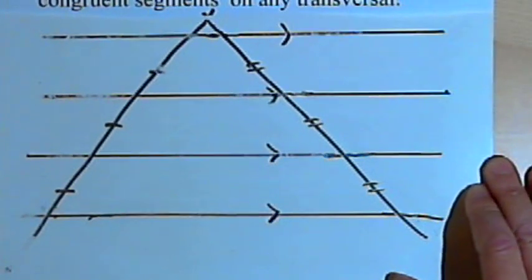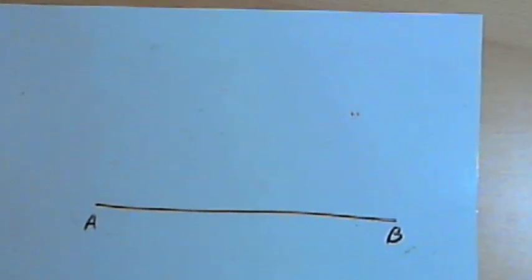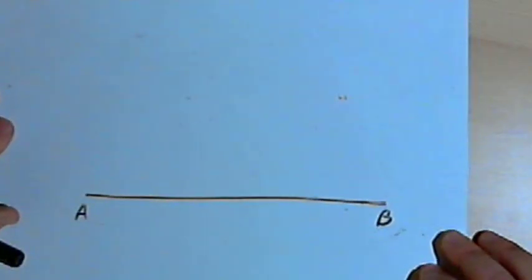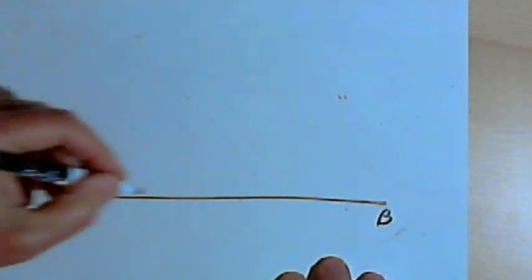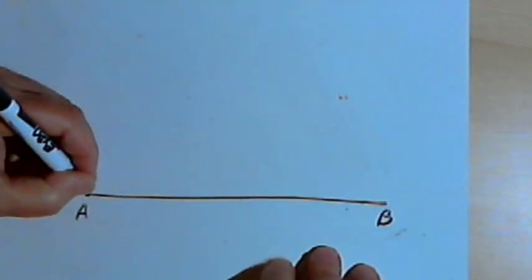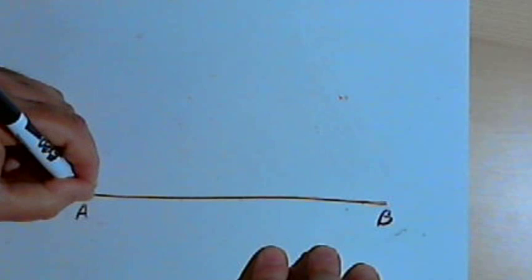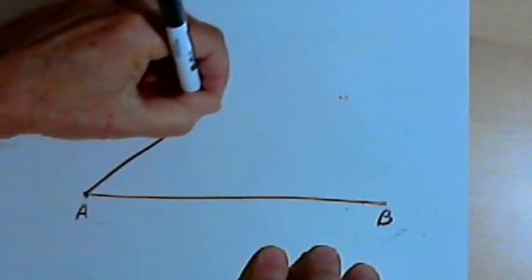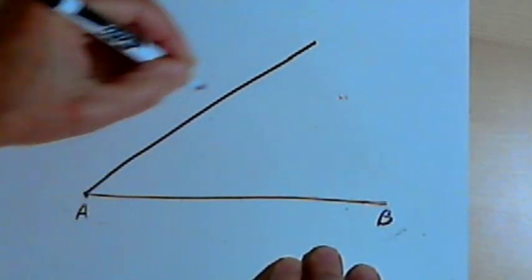Now, let's use that and understand how we can divide a line segment into equal parts. So I've drawn a line segment AB, and I'm going to draw a ray from point A.